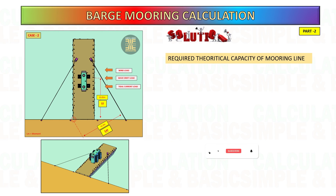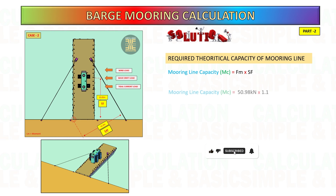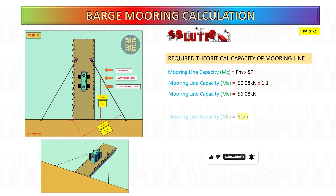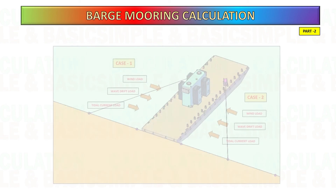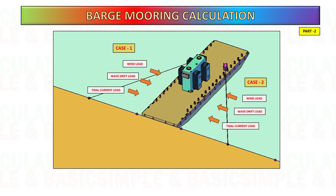This is the theoretical capacity of mooring line required. To get the mooring line capacity, multiply by a safety factor — I consider 10 percent contingency. For deciding the required mooring line, you need to consider the maximum value.